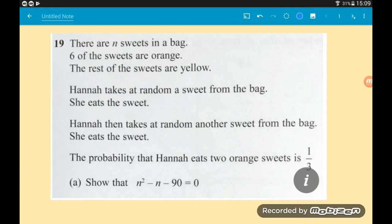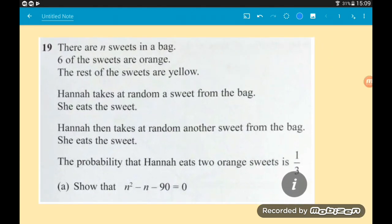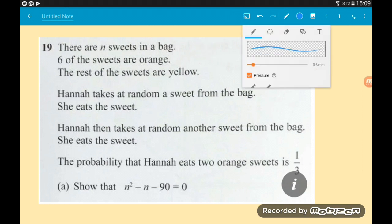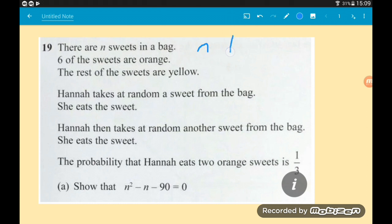We're talking about sweets in a bag. You wouldn't think it can be too bad really, but things certainly need to escalate. So we've got the question here then. There are n sweets in a bag. That's important to start with. Six of the sweets are orange. The rest of the sweets are yellow. So before we even go any further, let's just write down some stuff from that. We've got n total, we've got six orange.